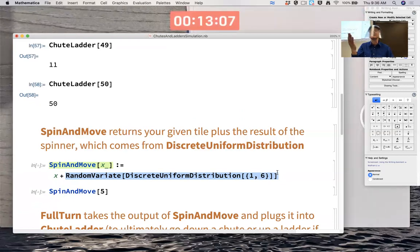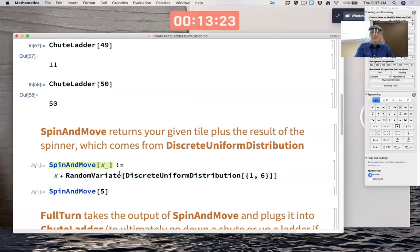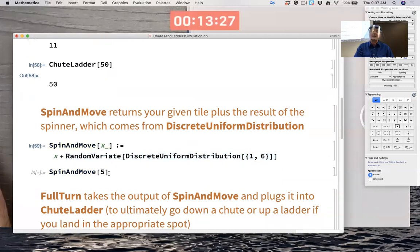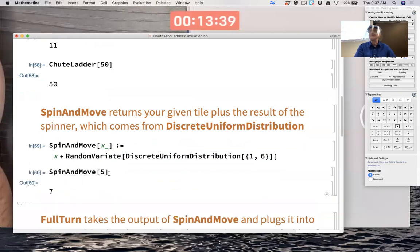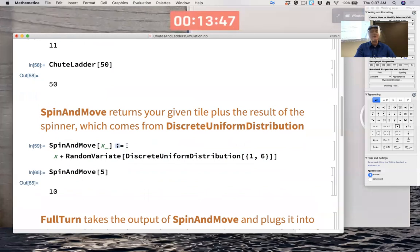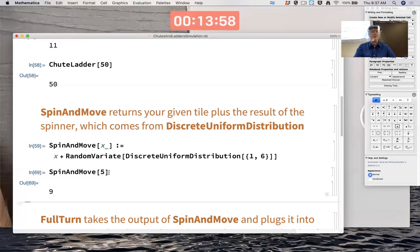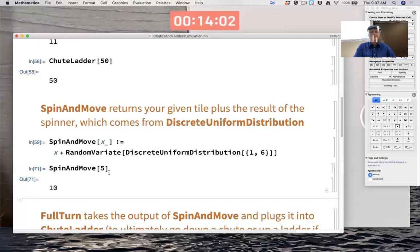Of course, we could use a die as well instead of a spinner. DiscreteUniformDistribution, those numbers one, two, three, four, five, and six all occur with probability one sixth. And RandomVariate is going to then simulate sampling from that distribution. And I'm adding it to x. So for example, if I plug in five, the output is going to be five plus some random number between one and six with equal probability. So the answer could be six, seven, eight, nine, 10, or 11 with equal probability. But you're never going to get something less than six or more than 11 here. I can keep re-entering it.